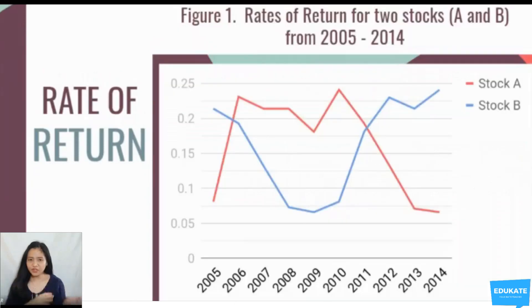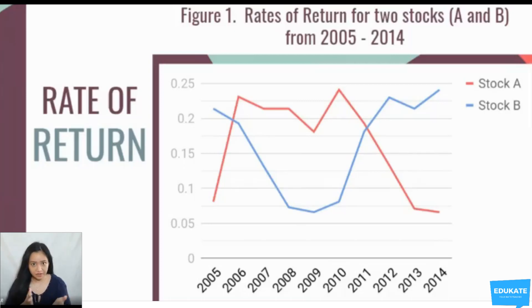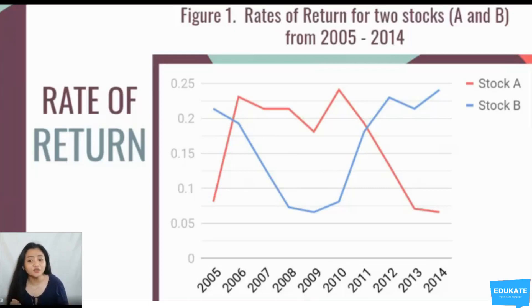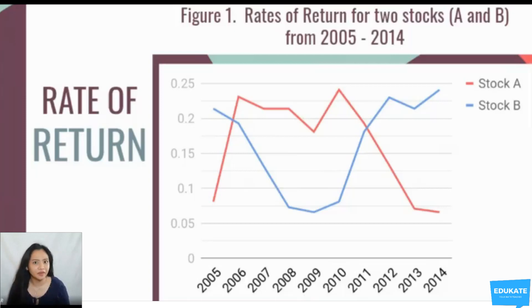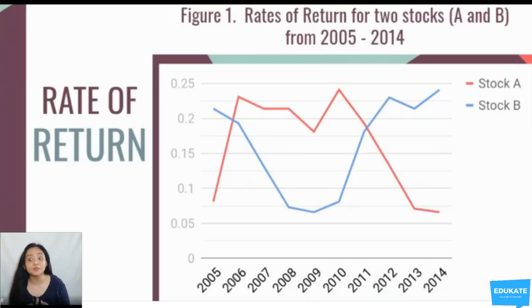As we noticed, there are no differences in the computed summary statistics. However, as we can see in the graph, the trend and actual values of the rate of returns are different. Such observation tells us that it is not enough to simply use measures of location or measures of central tendency to describe a data set. We need additional measures — such as measures of variation or measures of dispersion — to describe the data sets further.